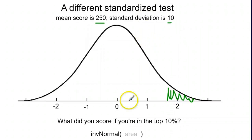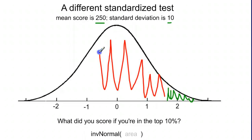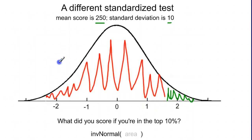The tricky thing about your calculator: the inverse normal function does not handle area on the right — it only handles area on the left. So the area we're going to type into our calculator is not 0.1 but 0.9, the area to the left side of that point. This is 10% on the right, 90% on the left, and inverse normal gets the area on the left side.